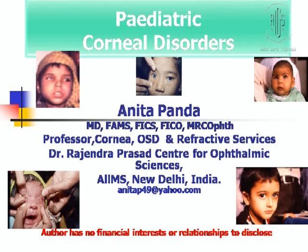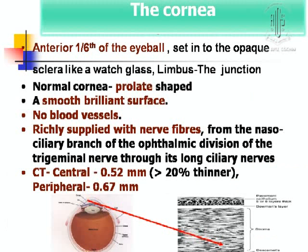The topic of my presentation is challenges and changes in pediatric corneal disorders. Coming to the anatomy and optical aspect of cornea, as we know it is the anterior one-sixth of the eyeball. It is prolate-shaped in the normal cornea.